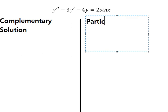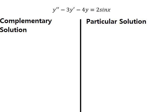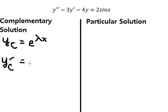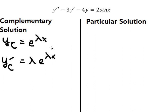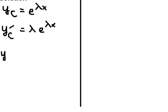I will put yc equals to e to the power of λx. Then we do the first derivative of yc, and we have λ e to the power of λx. We keep the same e to the power of λx, and the first derivative of λx gives λ. Then we do the second derivative of yc, which is λ² e to the power of λx.